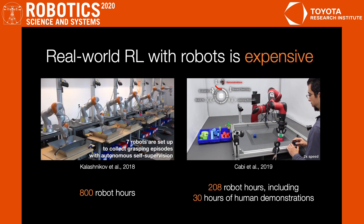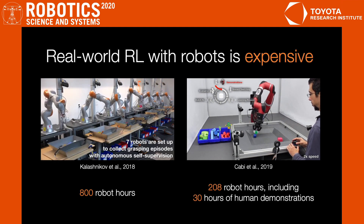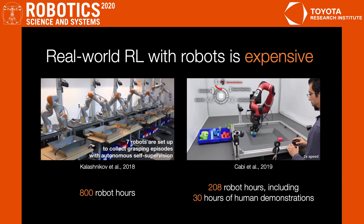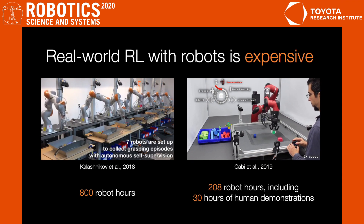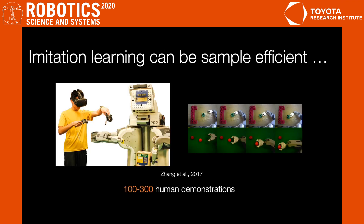It takes a lot of data for robots to learn to perform manipulation tasks, even for grasping or stacking, which are short-horizon tasks. But we know that imitation learning can be sample-efficient. In prior work, a handful of human demonstrations have been used to train a robot to perform different skills.